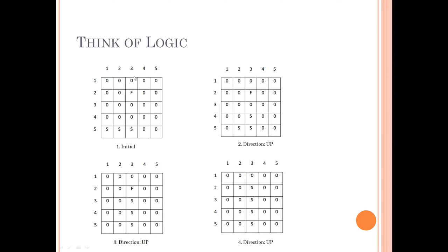Think about logic. We have a 5×5 matrix representing the board. Snake is represented by S and food by F. Once the user gives a direction up, the new cell becomes S and the previous tail cell becomes 0 — that's how the snake appears to move. If the snake consumes food, we do not make the tail cell 0, so the snake length increases to 4. This is the moving snake logic.